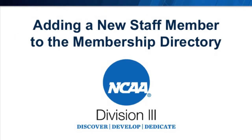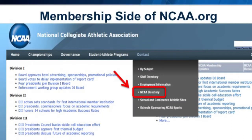When a new athletics administrator, university official, or coach joins your institution's staff, the NCAA requests that you submit their contact information to the NCAA membership directory. You may also need to update an existing staff member's contact information or role. It is important to continually update the membership directory because it enables staff to receive relevant communication from the NCAA National Office, appear as one of their institution's top five contacts, sign up for NCAA Connect, and receive the quarterly Champion Magazine publication. The NCAA directory is located on the membership side of NCAA.org.